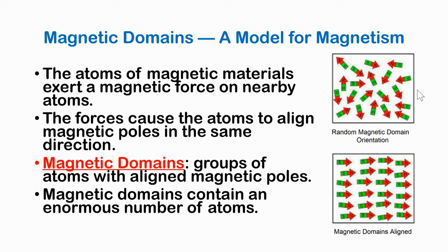On the bottom, you can see all the arrows are pointing the same direction. All the south sides of the atoms are on the same side; all the north sides are on the same side. So this magnetic domain — all these atoms with aligned magnetic poles — makes the same iron, for example, behave like a magnet. The atoms of magnetic materials exert a magnetic force on nearby atoms. That force causes the atoms to align magnetic poles in the same direction. So we have magnetic domains, and that is groups of atoms with aligned magnetic poles.